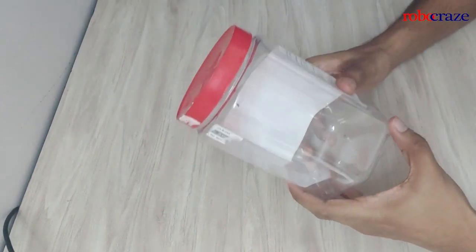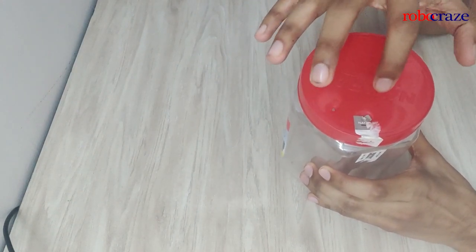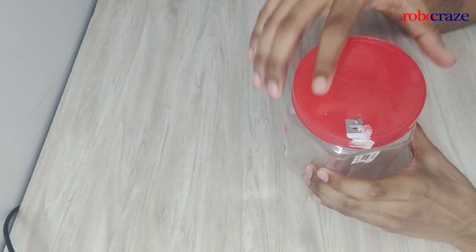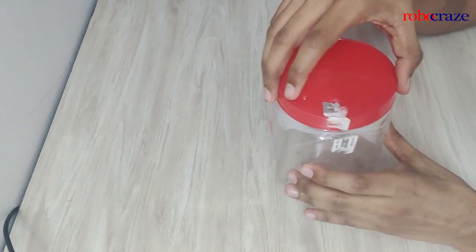To start off with, you take an empty jar and you poke two holes for the tubing and the wires respectively. You can use a tweezer or anything pointy to poke two holes.